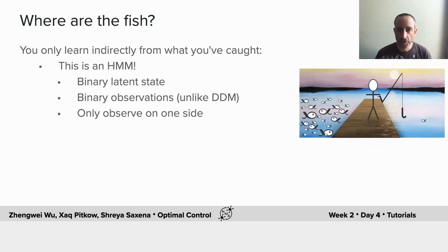Next, we're going to allow the fish to move according to a telegraph process. That makes this a hidden Markov model, again with a binary latent state. Now, unlike yesterday with the drift diffusion model, we will have binary observations. That is, did you catch a fish in this time step or not?